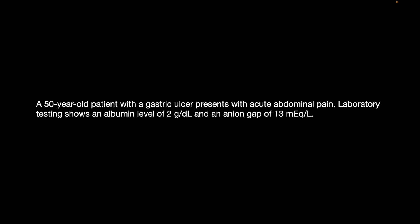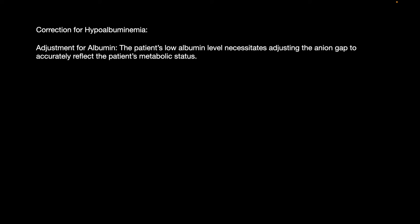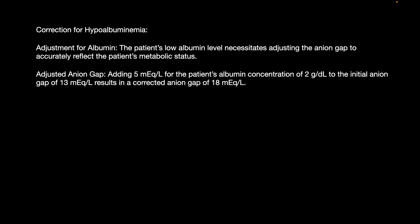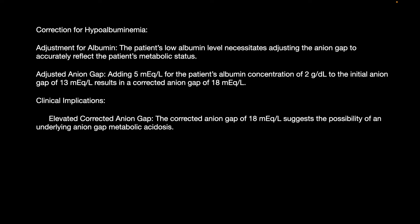Next case: a 50-year-old gastric ulcer patient with acute abdominal pain. Lab tests show albumin of 2 and anion gap of 13. After correcting for hypoalbuminemia, the corrected anion gap is 18 — a high anion gap. The clinical implication is that this corrected anion gap of 18 suggests the possibility of metabolic acidosis.